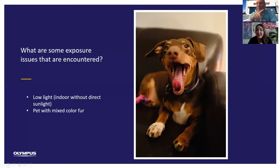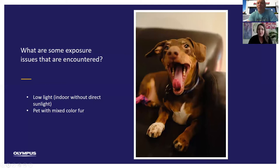Shelley did just mention exposure compensation, and for people who are just starting out with their cameras, they might not be familiar with that term. Auto exposure compensation is a really easy tool built into every Olympus camera whereby you can sort of override what the camera thinks is the correct exposure. Cameras always go for a middle gray type tone, and that's not always the best exposure basis.